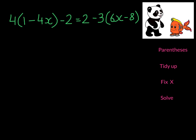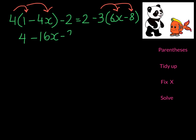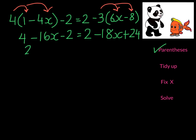This is our last example and we're going to have to distribute carefully in the first and second parentheses. So 4 times 1 is 4 and 4 times negative 4x is negative 16x. This negative 2 is not affected. But I get negative 18x and positive 24. So we've gotten rid of the parentheses. Now we need to tidy up. I have this 4 here with this negative 2 — that simplifies to give me 2. The negative 16x is okay, and on the other side I group those 2 numbers to give me 26. So we've tidied up.